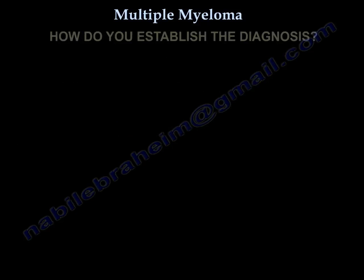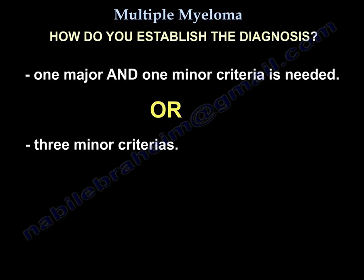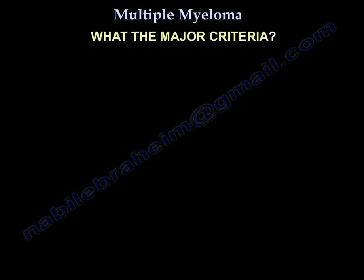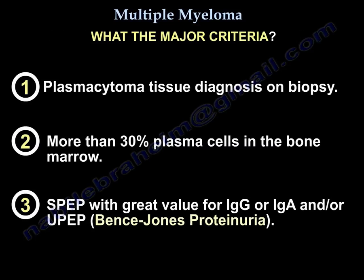To establish the diagnosis, you need one major and one minor criterion, or three minor criteria. Major criteria are: (1) plasmacytoma tissue diagnosis on biopsy, (2) more than 30% plasma cells in bone marrow, and (3) SPEP with high values for IgG or IgA, and/or UPEP showing Bence-Jones proteinuria.